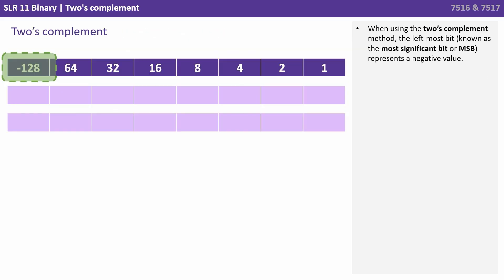When using the two's complement method, the leftmost bit known as the most significant bit or MSB represents a negative value. So in this case negative 128.